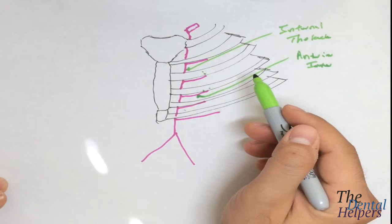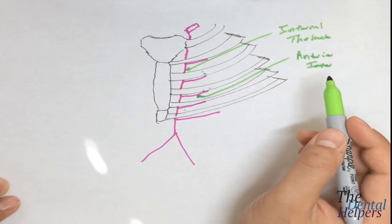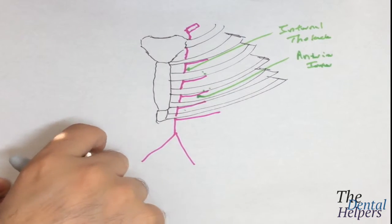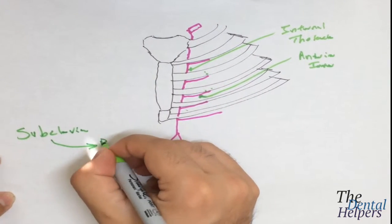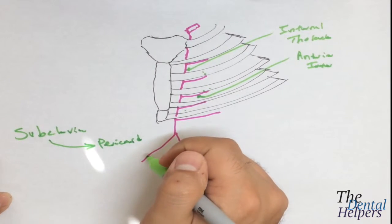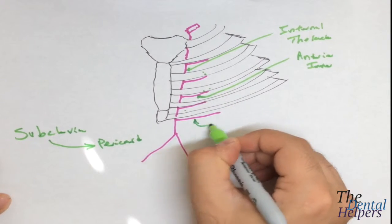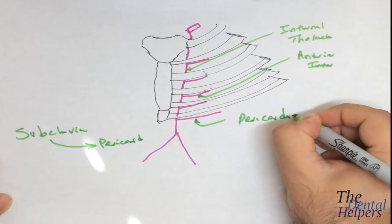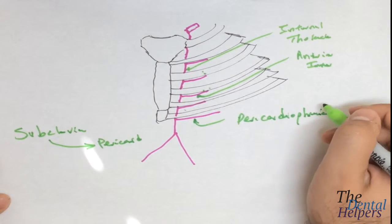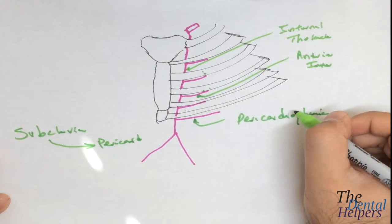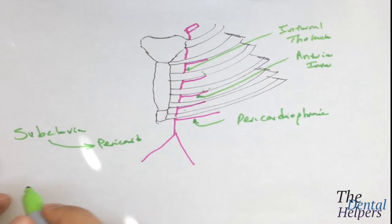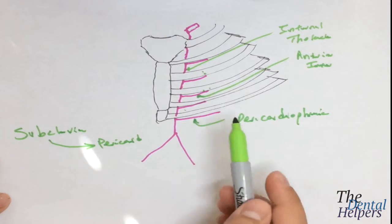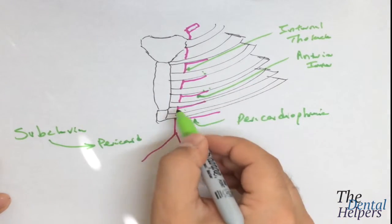Then we have the pericardiophrenic artery, which is really the first branch of the internal thoracic artery. Its origin is around the subclavian artery, then it branches into the pericardiophrenic. What this does is feed the pericardial sac — the sac that surrounds the heart — and it also feeds the diaphragm and accompanies the phrenic nerve. We'd expect to find the heart around the third or fourth rib level.